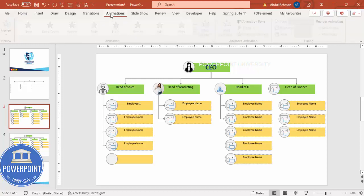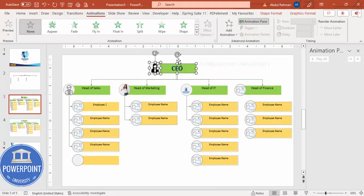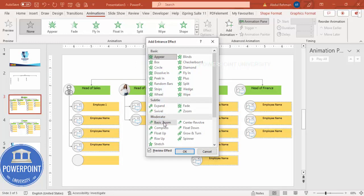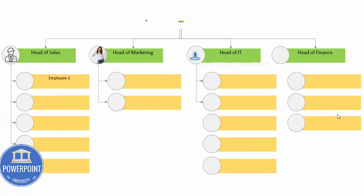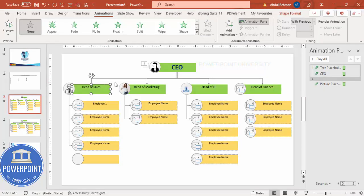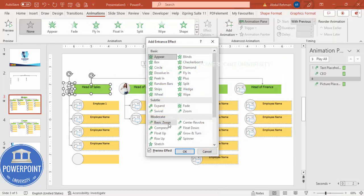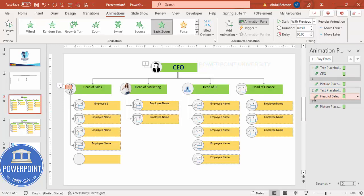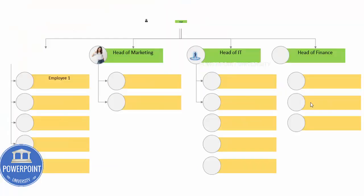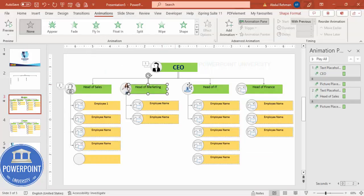One more thing you can do is add animation effects. Go to Animations, enable the Animation Pane, select a shape, go to Add Animation, More Intense Effects, and select Basic Zoom, then click OK. Change the trigger to 'With Previous' so everything plays together. Note that you cannot group placeholder columns with Ctrl+G. Apply the same Basic Zoom animation to each element with 'With Previous,' and you can animate the connecting lines as well.